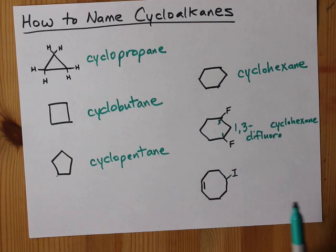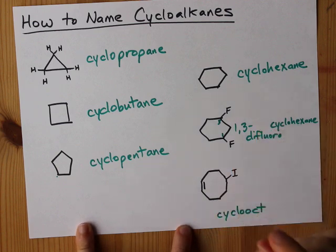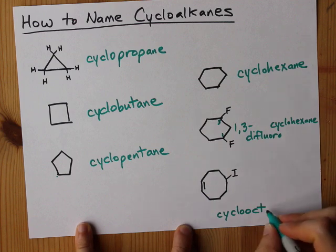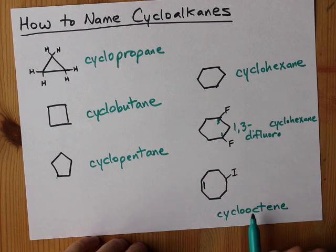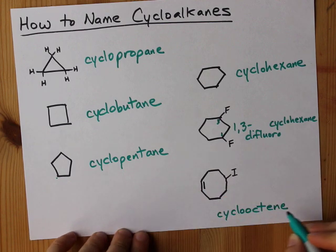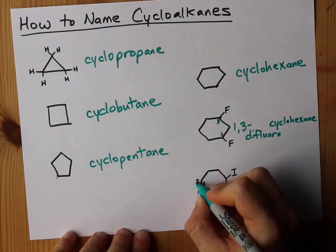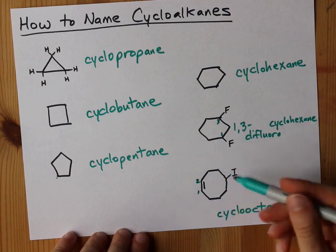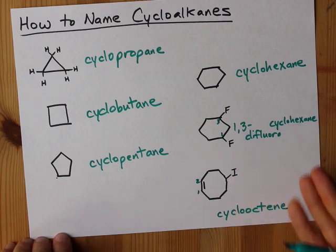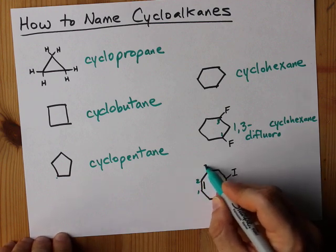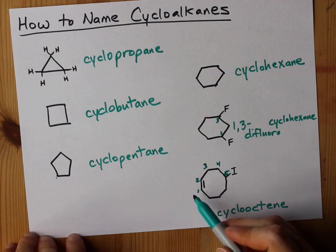Just pointing this out in case you have a question like it in your homework. This is a ring of eight carbons, so we have cyclooct-, but they're not all single bonded together — there is a double bond in there. So I have to call this cyclooctene, meaning there's a double bond. A cycloalkene needs carbon one on the double bond, and carbon two has to be the next carbon of the double bond. So I'll call this carbon one and that carbon two, which sets my numbers for the rest of the carbons. I don't need to tell people that the double bond starts at carbon one — we all know that's true here. Counting around: one, two, three, four, five — this iodine is on carbon five of the ring.